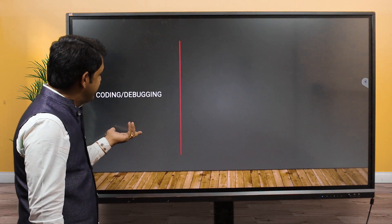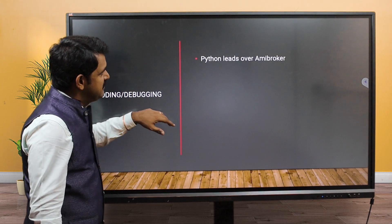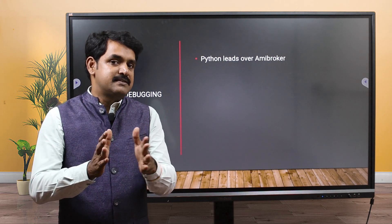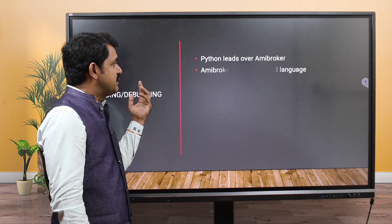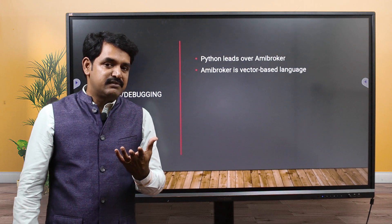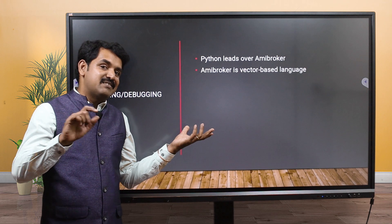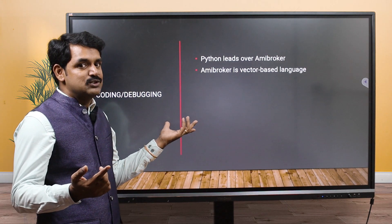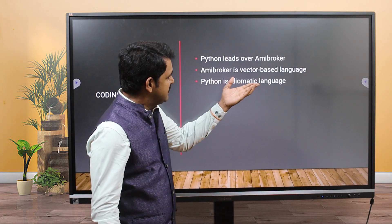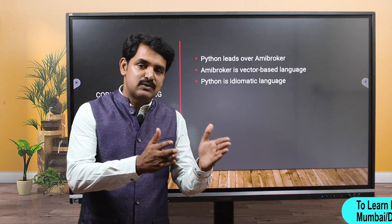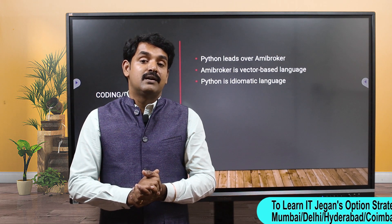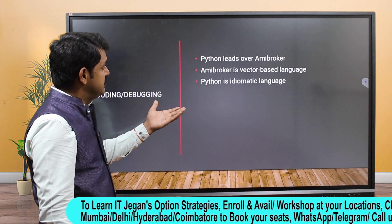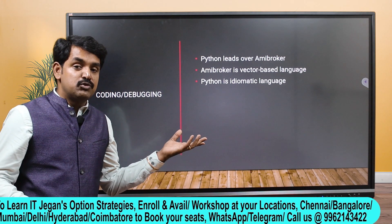For coding and debugging, some people say AmiBoker is best, but in my opinion Python is best. If you are new to both, Python is a very simple language whereas AmiBoker is a vector-based language. For a newcomer, that vector-based language is really tough because it executes everything like an array. In the real world, vector-based languages are very rare - C, C++, and Java are not vector-based.